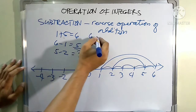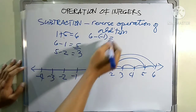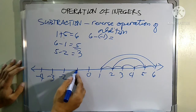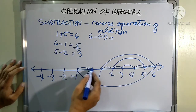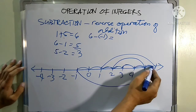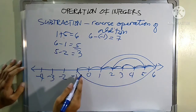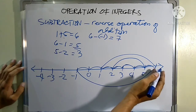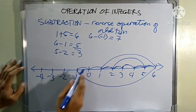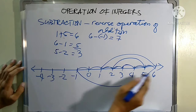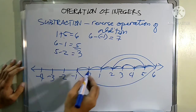How about six minus negative one? What number must be added to negative one in order to get six? Let's count: one, two, three, four, five, six, seven — there are seven units from negative one to six. Therefore the answer is seven, and since our movement is from left to right, it is positive seven.